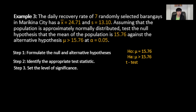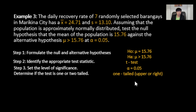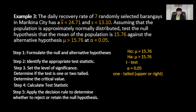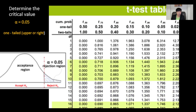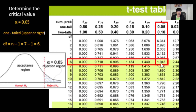Alpha equals 0.05. Since the alternative hypothesis points to the right (mu greater than 15.76), this is a one-tailed right-tailed test. To determine the critical value from the T-table, we need the degree of freedom: df equals n minus 1, which is 7 minus 1 equals 6. For a one-tailed test at alpha equals 0.05 with 6 degrees of freedom, the critical value is 1.943. The rejection region begins at 1.943, separating the fail-to-reject region from the rejection region.